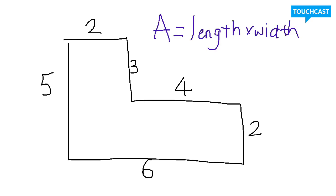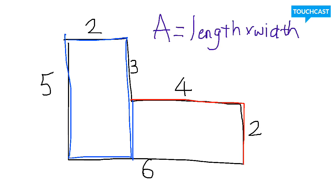Alright, so let's take a look at this shape. We can clearly split it into two different rectangles. I'm going to split it down the middle like this. So I have one rectangle — I'm going to do this one in blue — and a second rectangle — I'm going to do this one in red. Right now you should be copying this rectangle down on a piece of paper and splitting it just like I've split this.